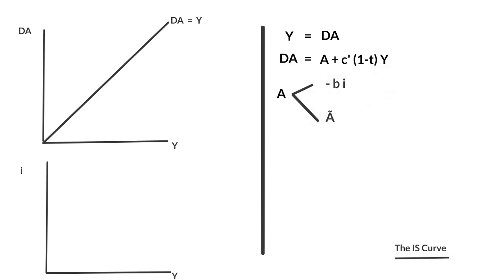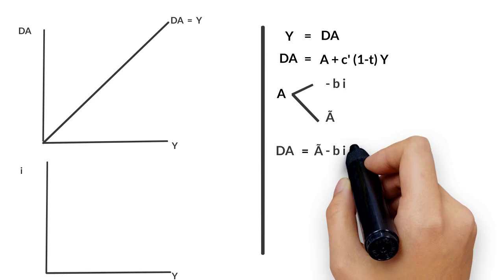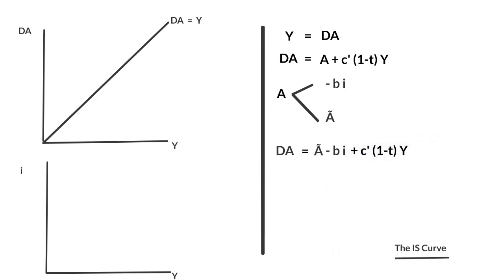The autonomous expenditure A can be divided into two components: one that depends on the interest rate, minus B times I, and the other that is independent, the autonomous expenditure A bar. Thus, the aggregate demand curve can be expressed as the sum of (A minus B·I) plus the marginal propensity to consume times the income level.